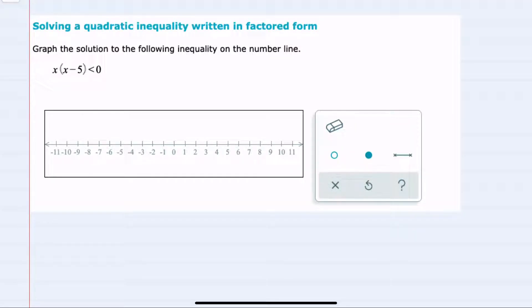In this video, I'll be helping you with the Alex problem type called solving a quadratic inequality written in factored form. We're asked to graph here x times x minus 5 is less than 0.